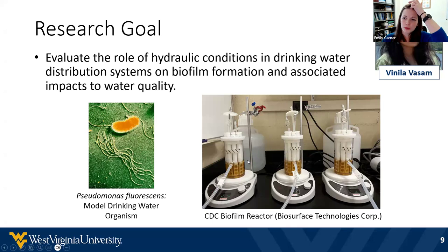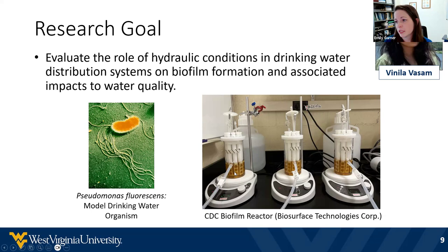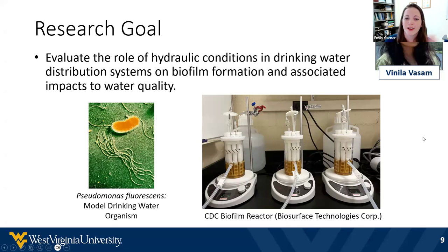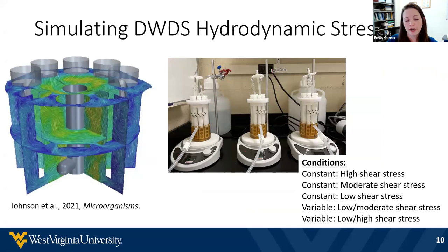We're using biofilm reactors manufactured by Biosurface Technologies Corporation. We use stir plates to simulate flow in a distribution system. Each reactor has 24 coupons — surfaces that can be removed for examination. By creating higher shear stresses, we can see how that affects the properties of biofilms forming on the coupons. This gives us much more control than we would have in a distribution system. The reason we picked these reactors is that there's been a lot of work demonstrating they simulate uniform shear stress on all coupons within the system, which is really helpful for comparing lots of different conditions.